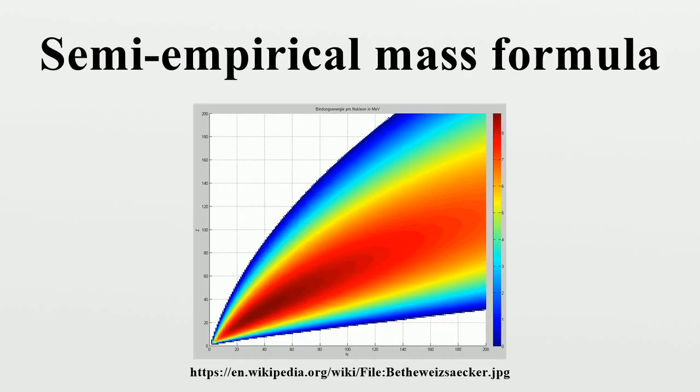One can also understand the asymmetry term intuitively, as follows. It should be dependent on the absolute difference |N-Z|, and the form (N-Z)² is simple and differentiable, which is important for certain applications of the formula. In addition, small differences between Z and N do not have a high energy cost. The A in the denominator reflects the fact that a given difference is less significant for larger values of A.